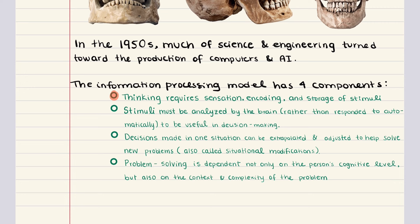We've covered sensation, encoding, and storage in previous chapters. Second, stimuli must be analyzed by the brain rather than responded to automatically to be useful in decision making. Third, decisions made in one situation can be extrapolated and adjusted to help solve new problems. And last, problem solving is dependent not only on the person's cognitive level, but also on the context and complexity of the problem.